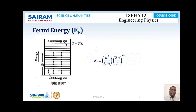The Fermi energy is given by the expression: EF = (h² / 8m) × (3n / π)^(2/3). Here, h is Planck's constant, m is the mass of the electron, and n is the number of electrons per unit volume.